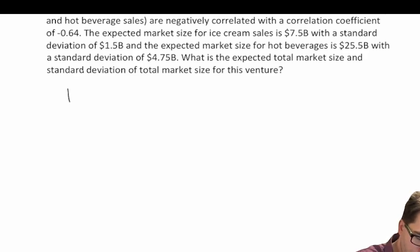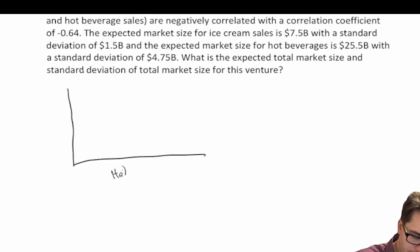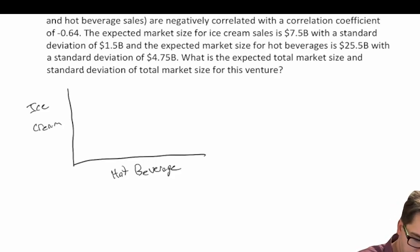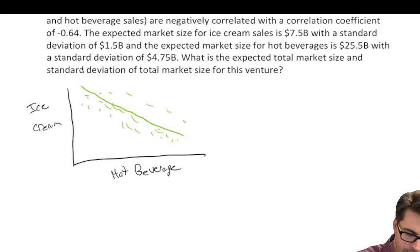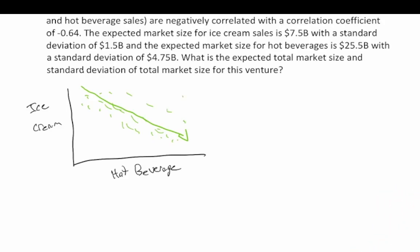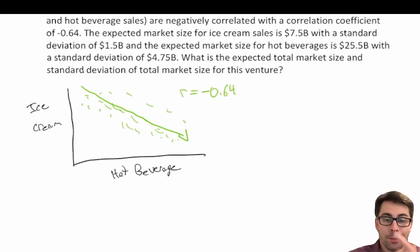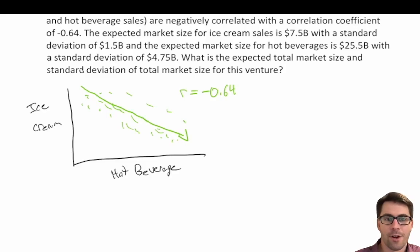Let's explore this for a second. If we put hot beverages on the x-axis and ice cream sales on the y-axis, a negative correlation coefficient means we have a negative linear relationship — as ice cream sales go down, hot beverage sales go up. A correlation coefficient of negative 0.64 perhaps makes intuitive sense: as temperature changes and it gets colder, ice cream sales drop while people want more hot beverages.